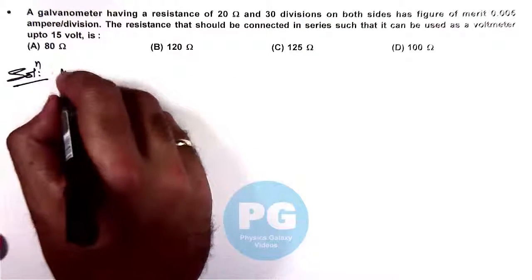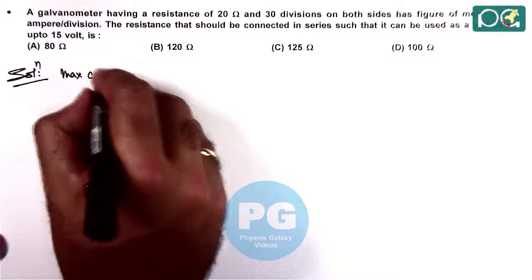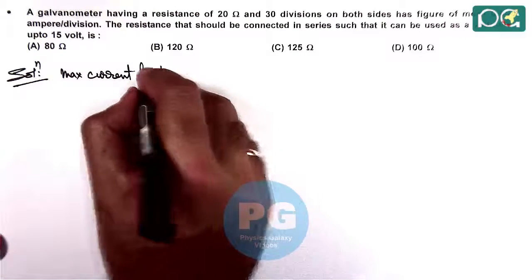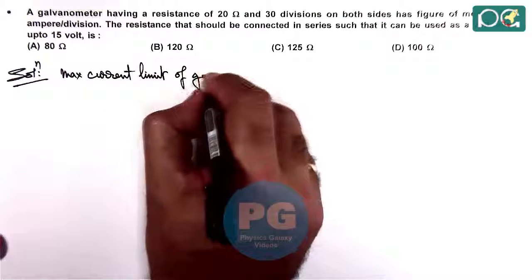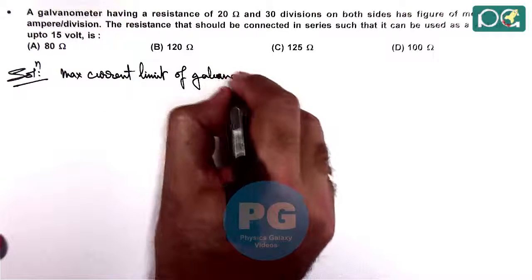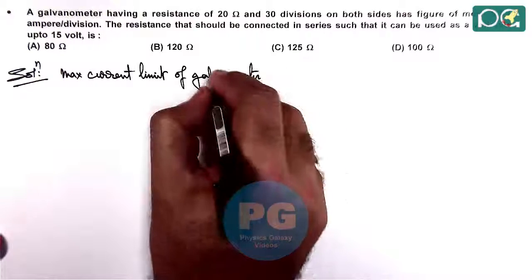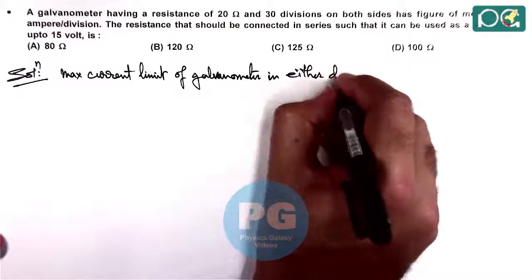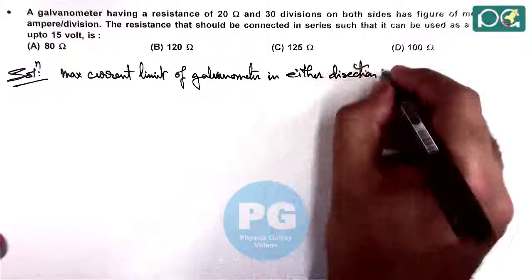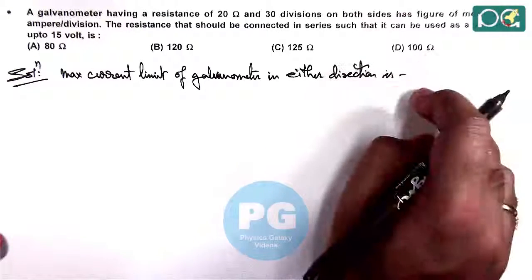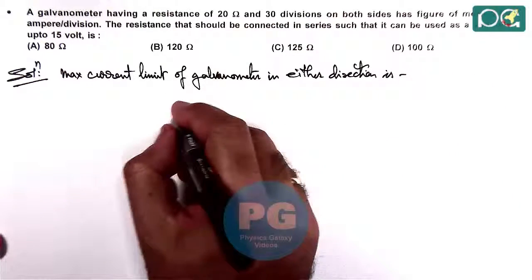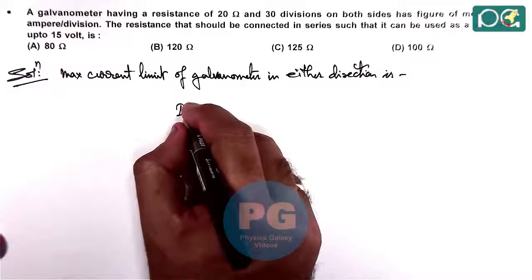So here maximum current limit of galvanometer in either direction is maximum current which can be supplied which can deflect up to 30 divisions on either side. So we can write Ig equals 0.005 ampere per division multiplied by 30.